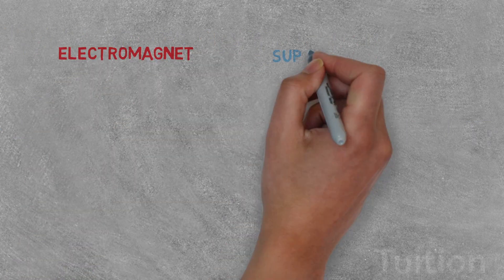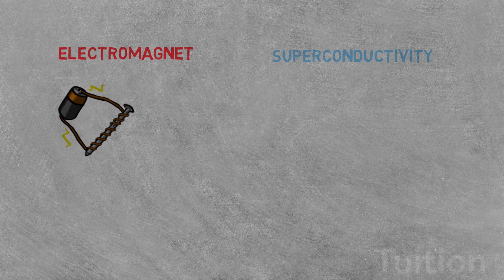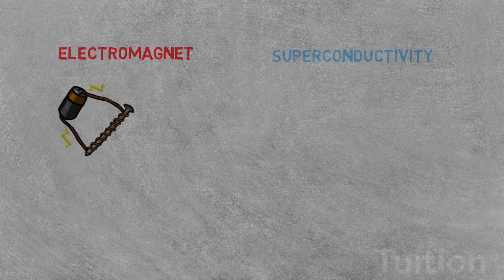What are electromagnets and what are superconductors? An electromagnet is a type of magnet in which the magnetic field is produced by an electric current. The magnetic field disappears when the current is turned off.